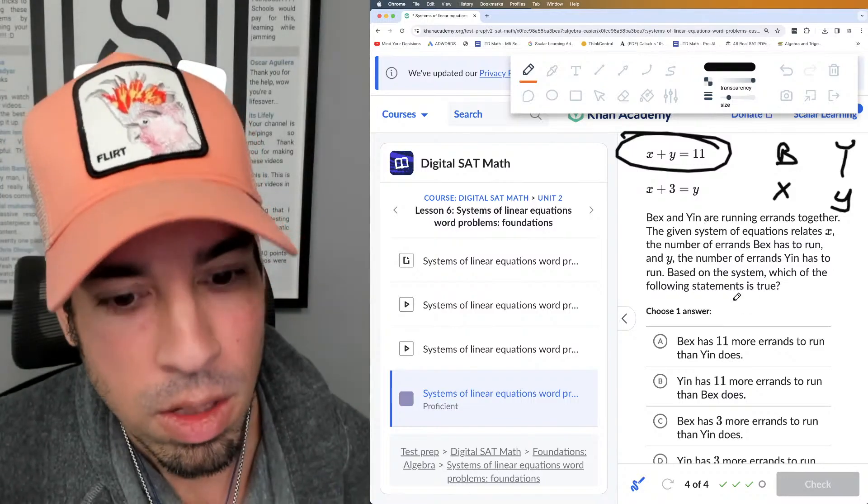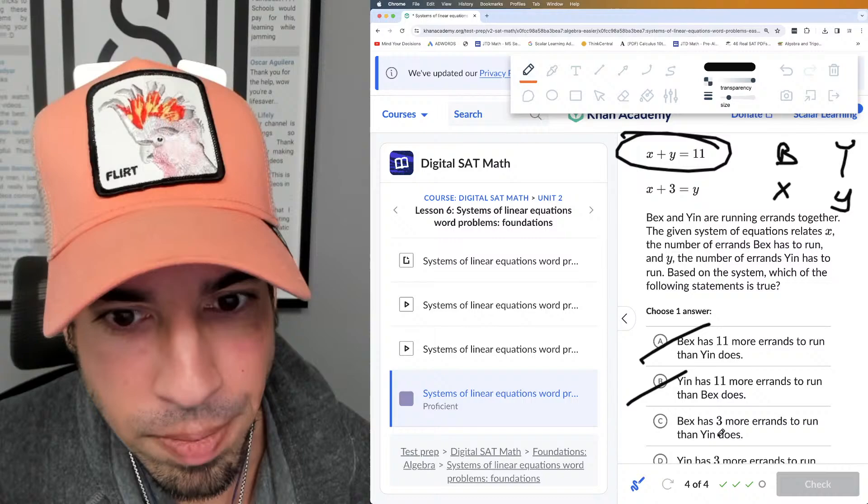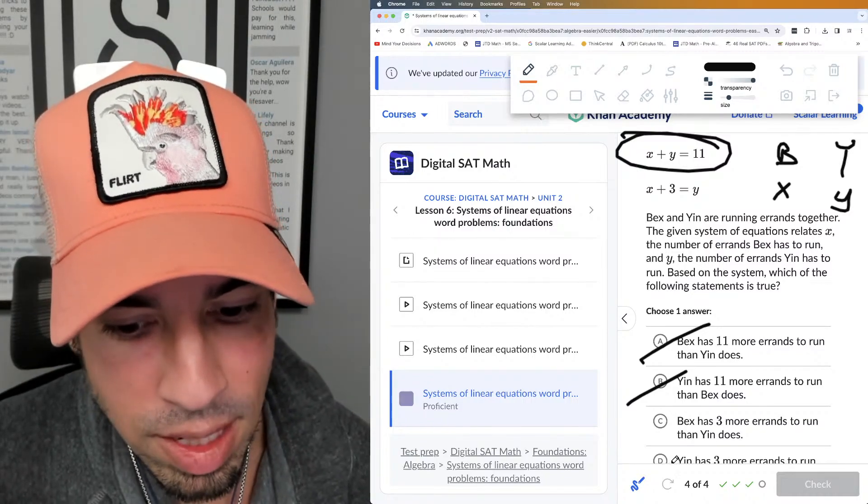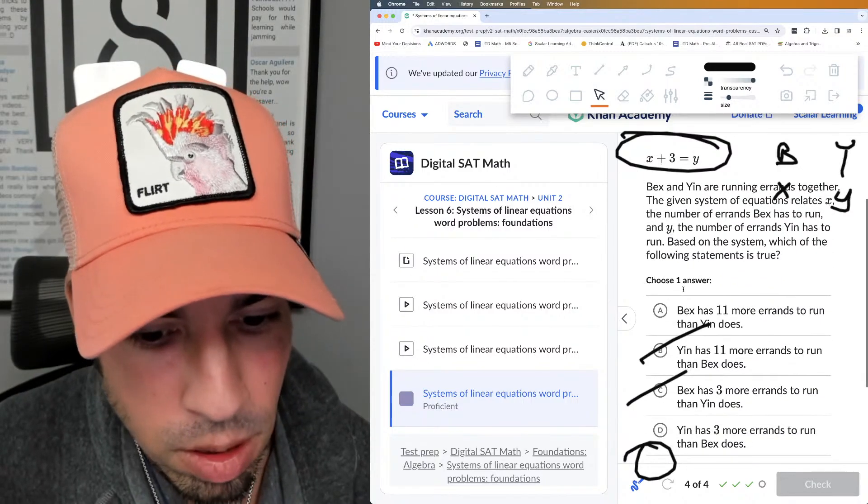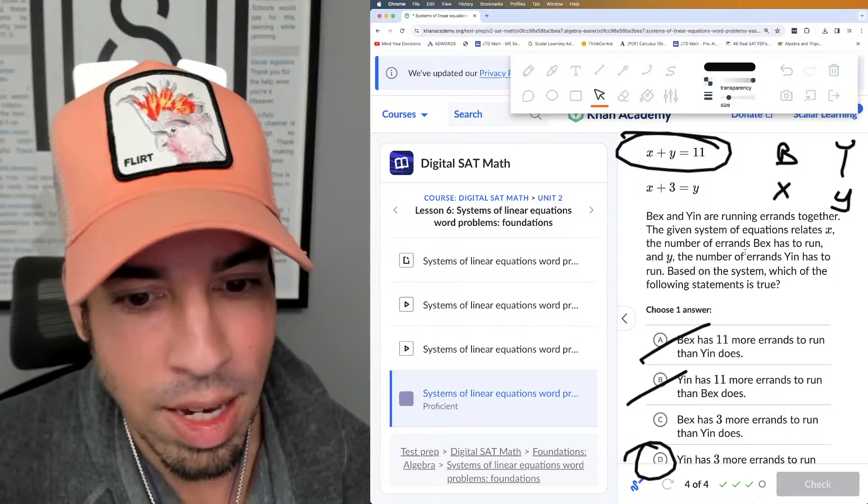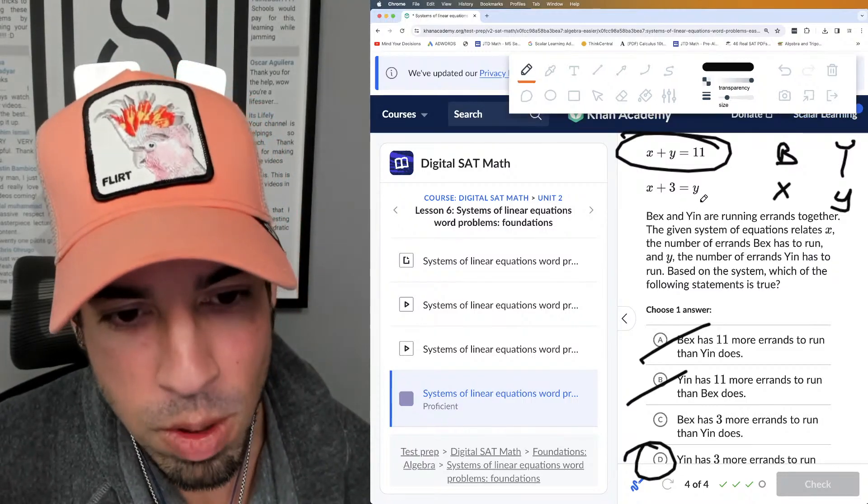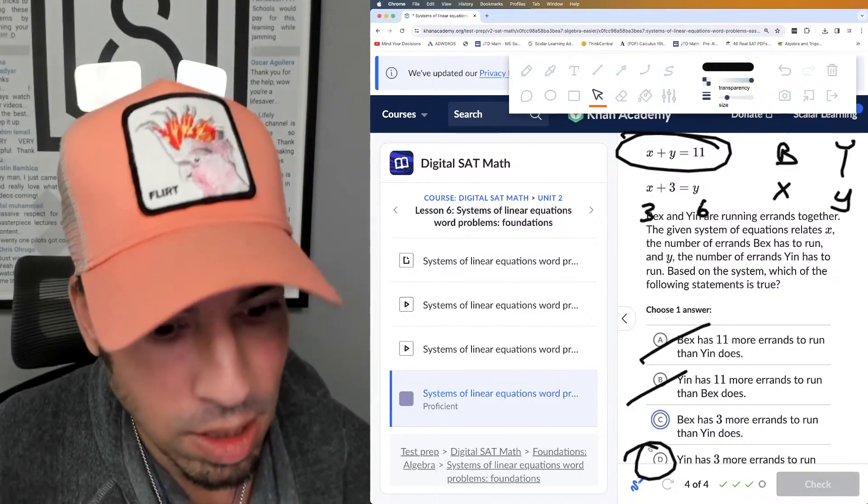If Bex had three, Yin would have six. If Bex has seven, Yin would have 10. Okay, let's see. Nope, not what we said. Nope, not what we said. I said that—no, I said that Yin has three more errands to run, which looks like D. Well, let's scroll down a little bit. Yin has three more errands to run than Bex does. And then we're just double-checking again: Yin is y, so if y is six, x would have to be three, and that checks out. So D is indeed the winner.